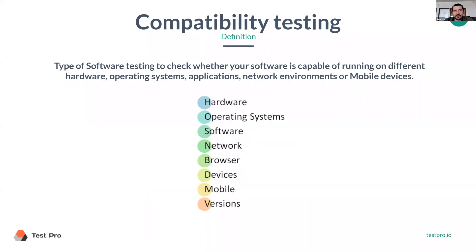There is another type of testing called compatibility testing. It's when you check your application on different hardware, operating systems, networks, and mobile devices. These days we have computers — Windows, Mac — and we have mobile devices running on iOS, Android, and it can be a phone or a tablet.